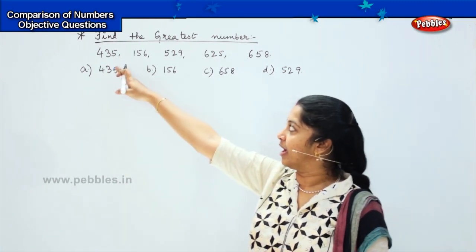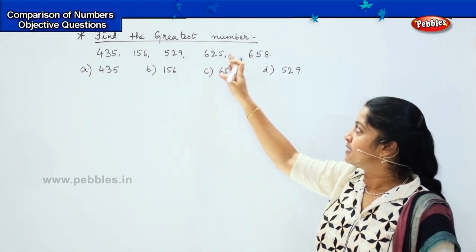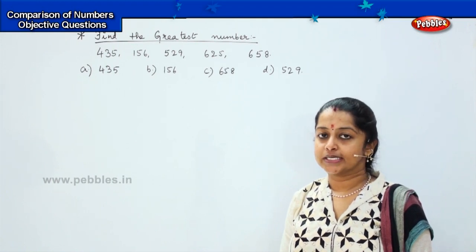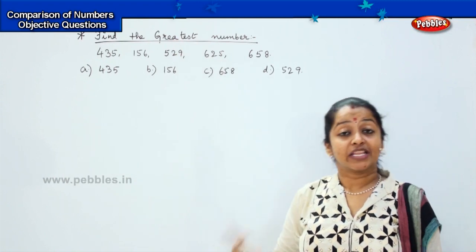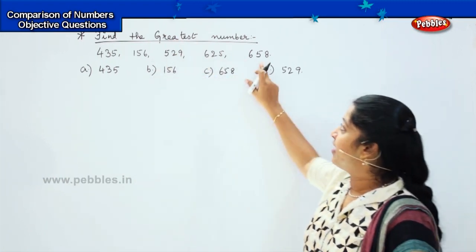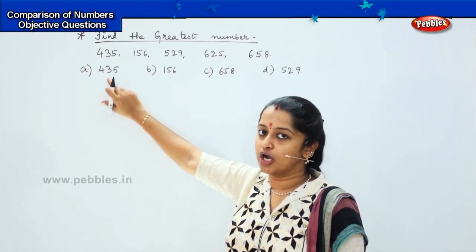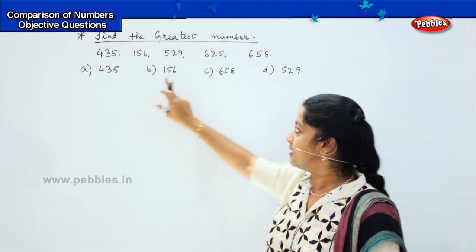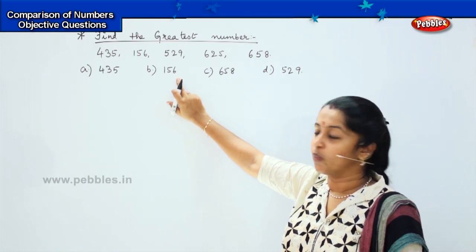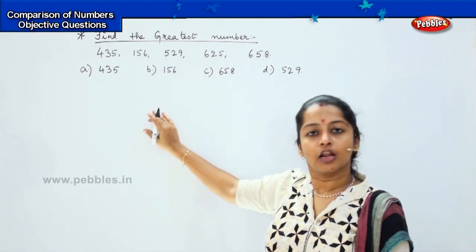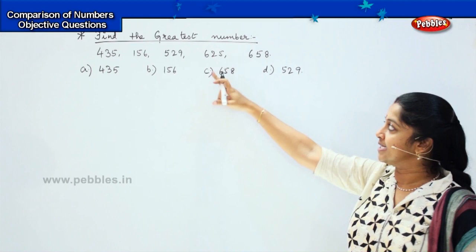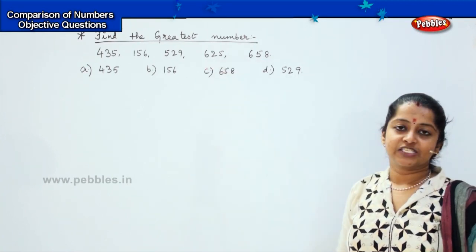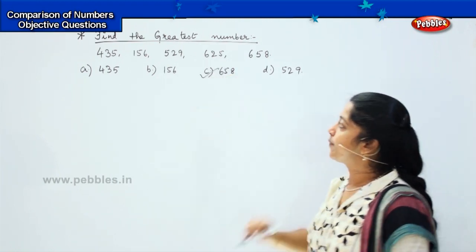Can you see the numbers given here? 435, 156, 529, 625, and 658. What is the first rule? We need to compare the numbers and see which number comes first. The question says we need to find the greatest number. Is option A the right option? No, because we have numbers which are greater than 435. Is 156 the right option? No, it is the smallest number of the given lot. What about 658? Is there any number which is greater than 658? No. 658 is the greatest number among these five. So, the right answer will be option C.